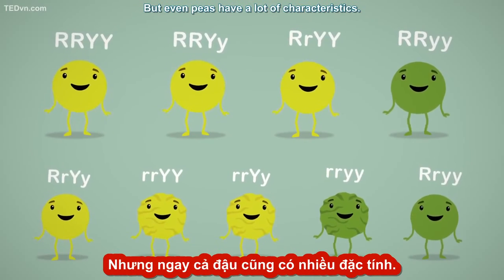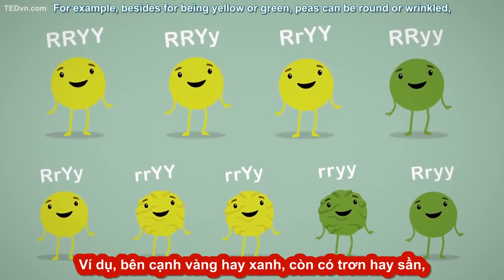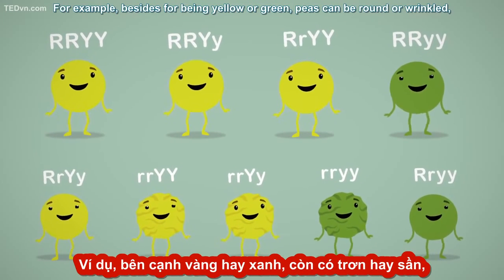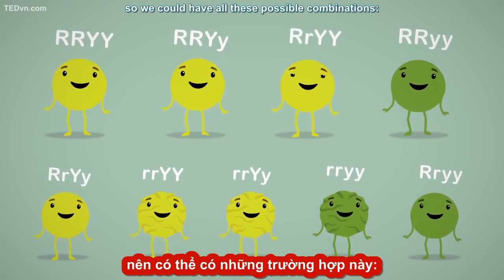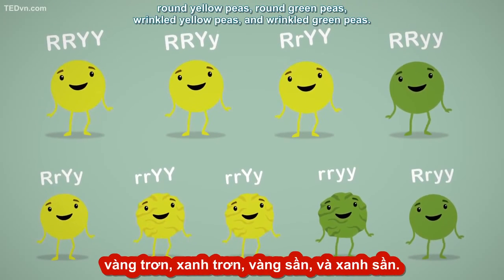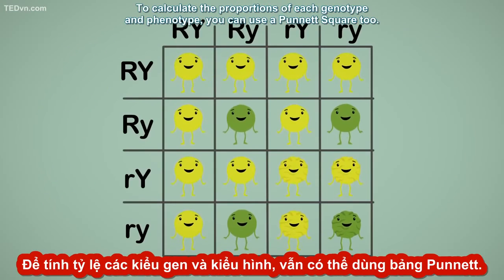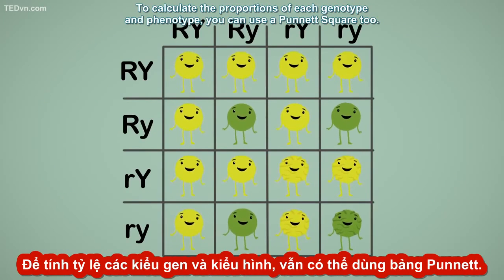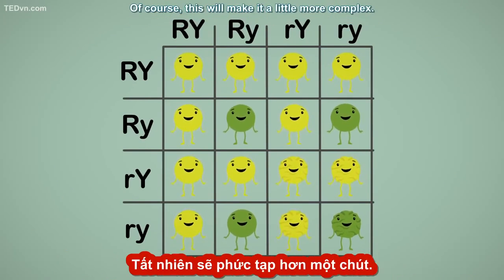But even peas have a lot of characteristics. For example, besides being yellow or green, peas may be round or wrinkled. So we could have all these possible combinations: round yellow peas, round green peas, wrinkled yellow peas, and wrinkled green peas. To calculate the proportions for each genotype and phenotype, we can use a Punnett square too — though of course this will make it a little more complex.